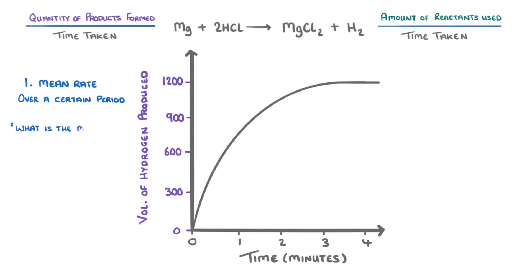For example, what is the mean rate of reaction in the first 3 minutes? For this we just need to use our graph to find out how much hydrogen was produced in those first 3 minutes.